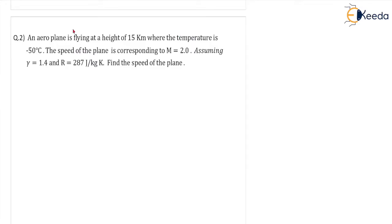As per the given question number two, an aeroplane is flying at a height of 15 km where the temperature is minus 50 degrees centigrade. The speed of the plane is corresponding to Mach number 2. Assuming gamma is 1.4 and R is 287 joules per kg kelvin, find the speed of the plane.